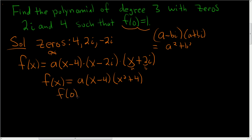So replace all the x's with 0's. So we get a, 0 minus 4, 0 plus 4, so we end up with negative 16a. And that should be equal to 1, therefore a is negative 1 over 16.